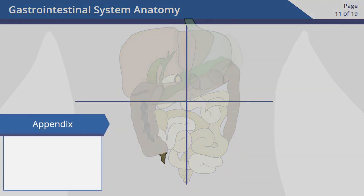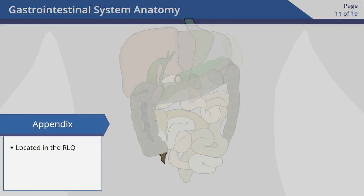The appendix is located in the right lower quadrant, just below the cecum. We don't know its exact purpose, but we do know we can live without one, if necessary.